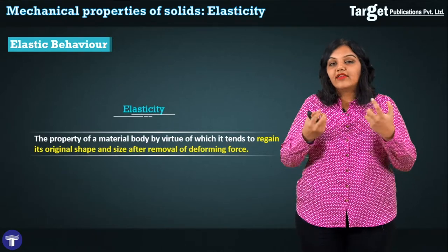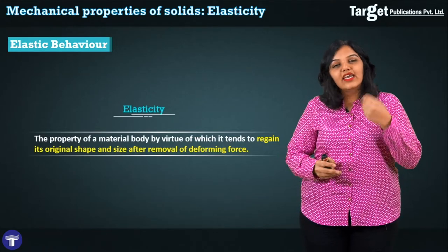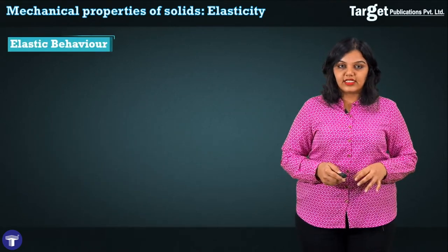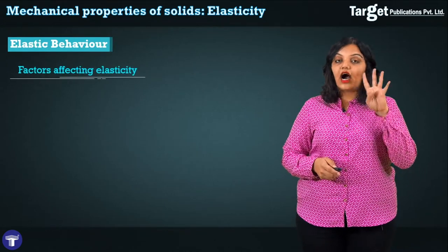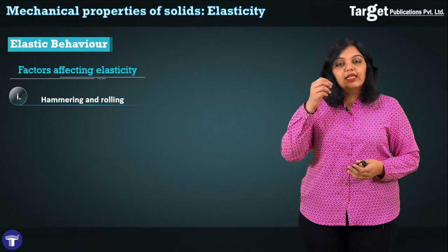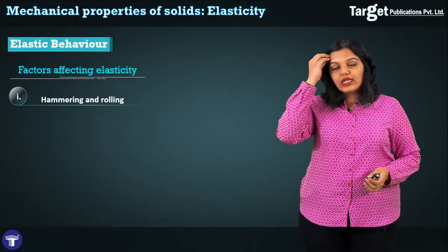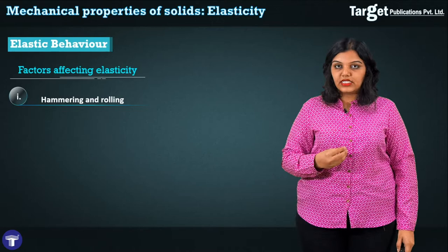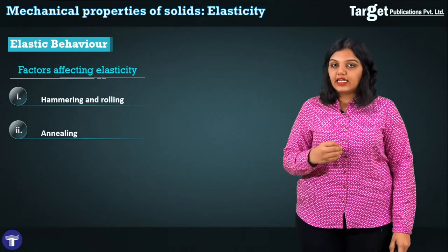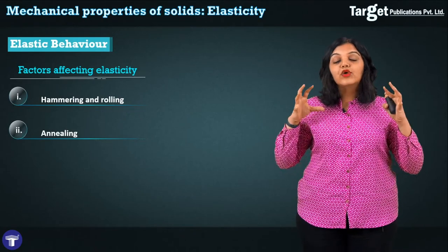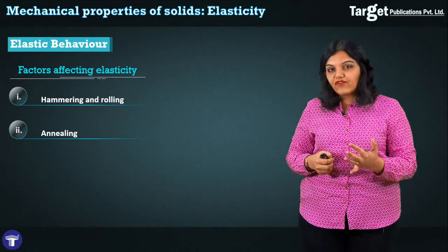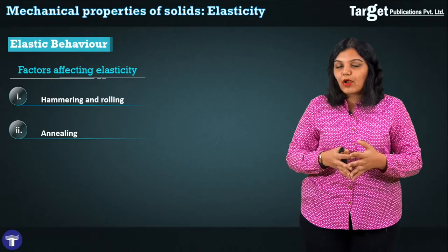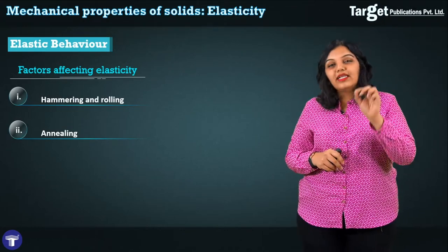We see elasticity all around us — for example, if we stretch a rubber band and release it, it comes back to its original position. That is the most famous example of elasticity. The factors affecting elasticity are four. The first is hammering or rolling: when you hammer or roll a material, you are breaking it up, which causes an increase in the elastic property. The second is annealing — heating a metal and cooling it slowly — which decreases elasticity and increases plasticity.